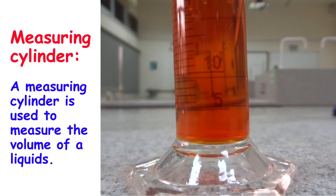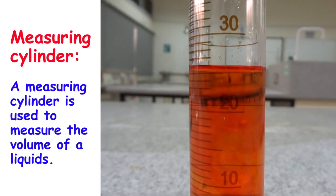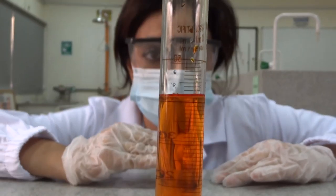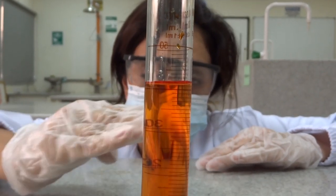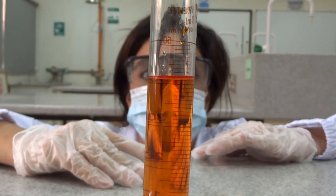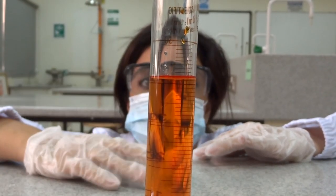A measuring cylinder is used to measure volumes of liquids. The volume is read from the bottom of the meniscus. Accordingly, the eye level must be at the level of the bottom of the meniscus to have an accurate reading.